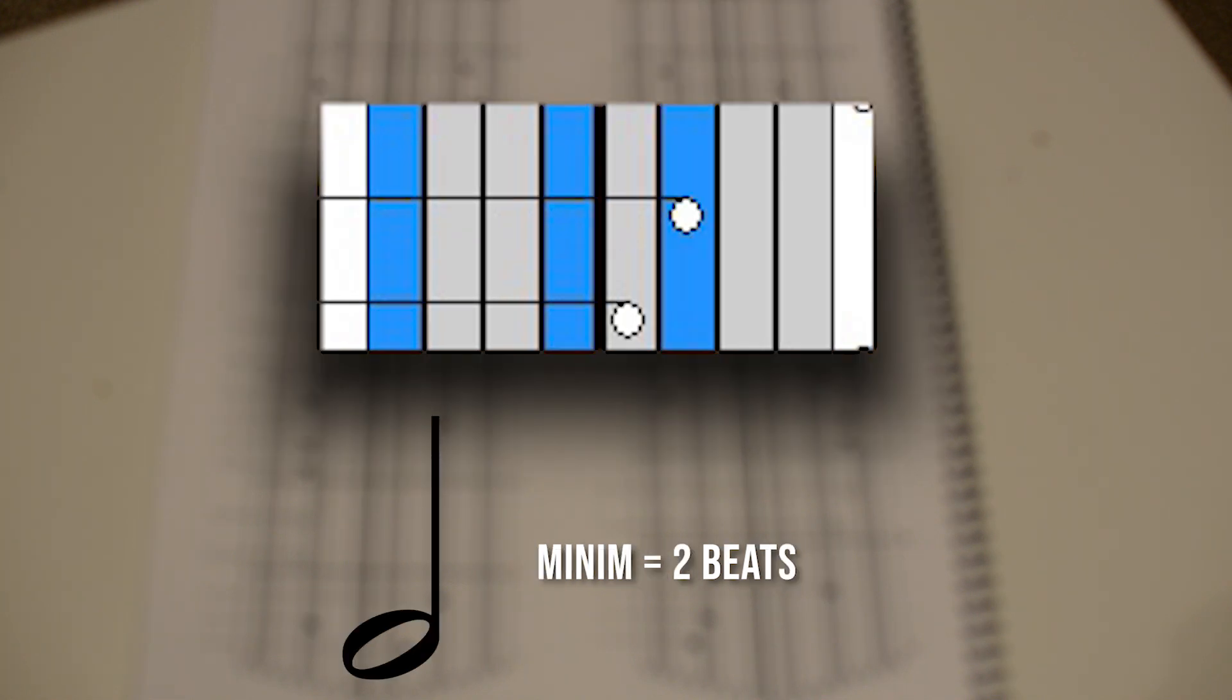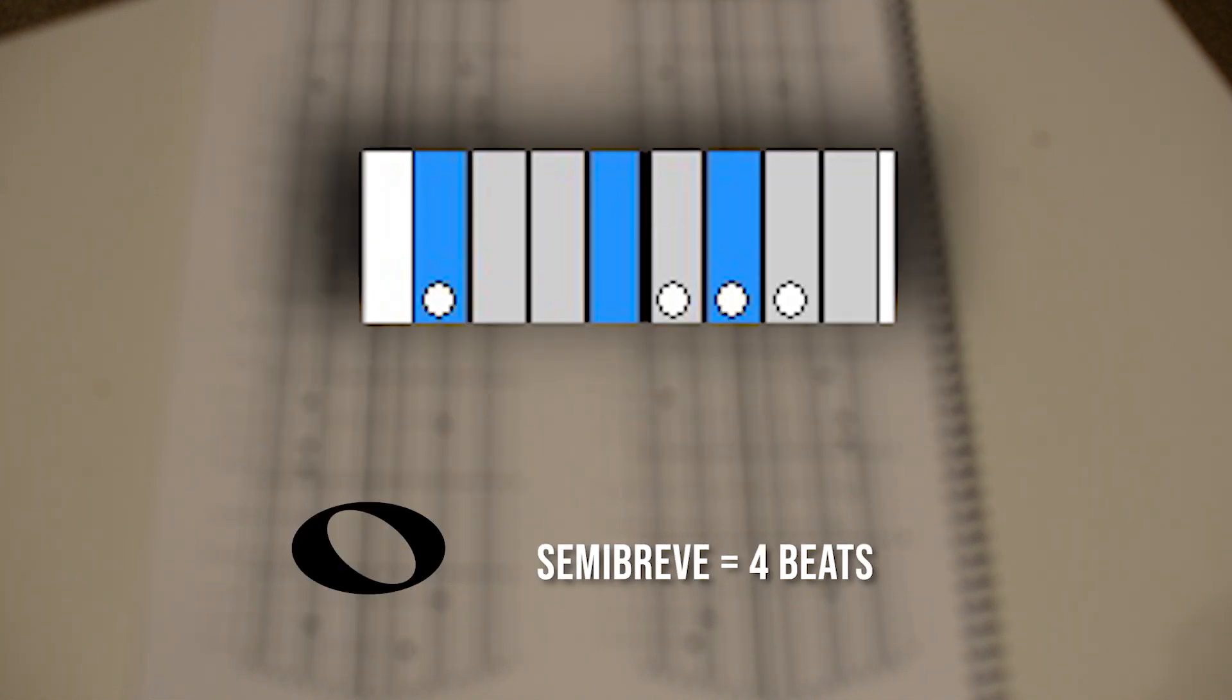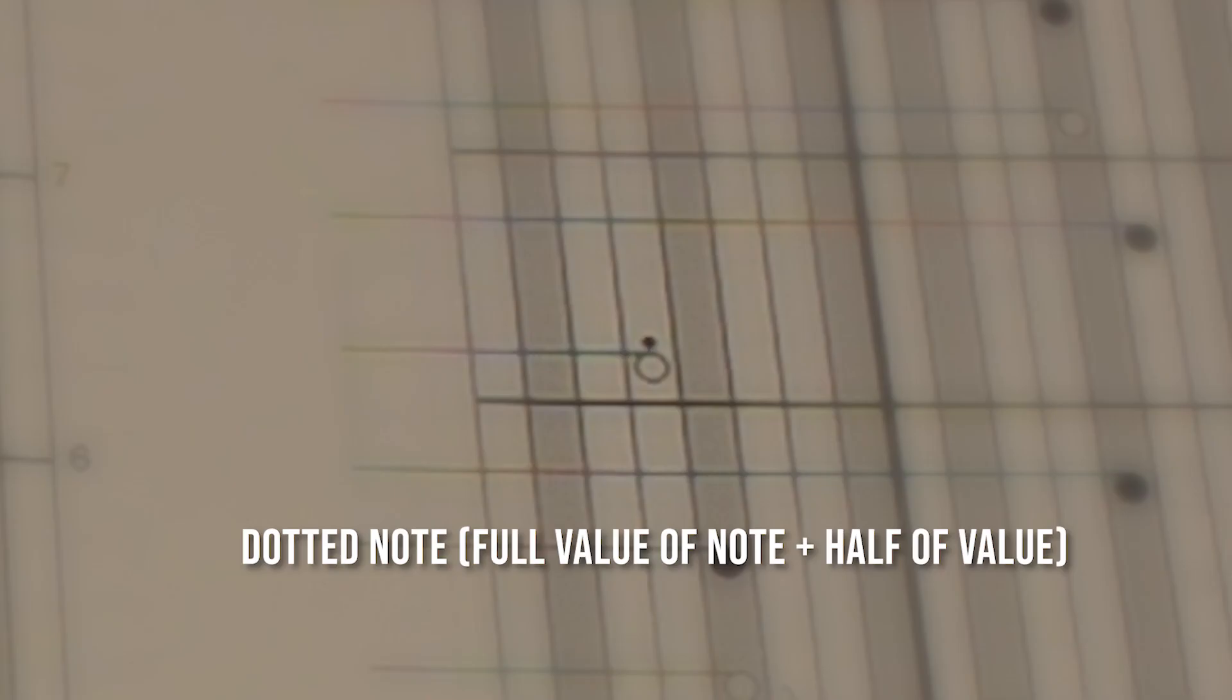This note is known as a minim, and it lasts for two beats. While not used in this score, a semi-breve, or a whole note, is often used in tablature to represent four beats.